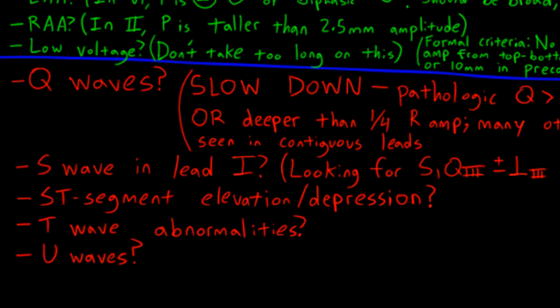Finally, I finish up the EKG by quickly scanning the precordial leads for U waves, which represent a second hump after the T wave. U waves can become more prominent in conditions such as hypokalemia, bradycardia, and QT prolongation.